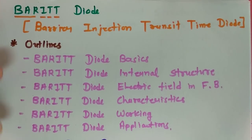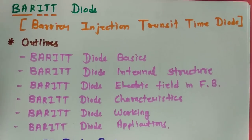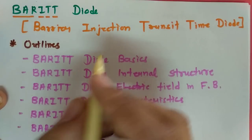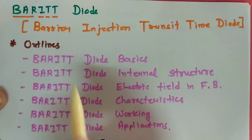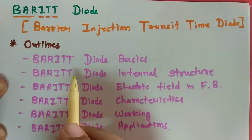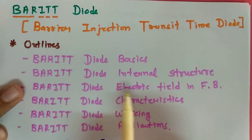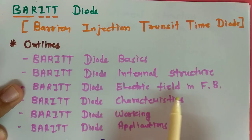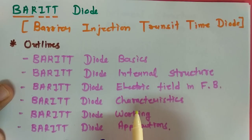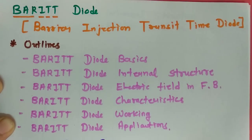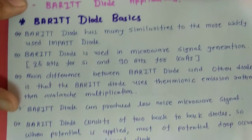In this session, I will be explaining Barrier Diode, also referred to as Barrier Injection Transient Time Diode. For this, I will follow these session outlines: basics of Barrier Diode, internal structure, electric field in forward bias, its characteristic, how Barrier Diode functions using waveforms, and finally its applications.